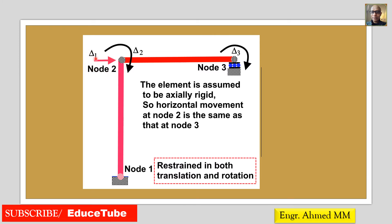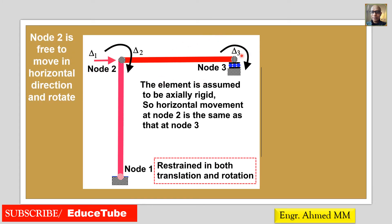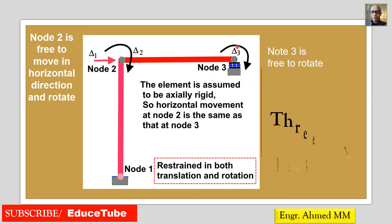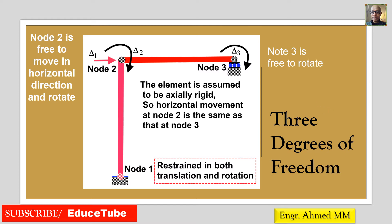That horizontal movement is delta 1. The rotation at node 2 is delta 2, and the rotation at node 3 is delta 3. So how many do we get? We get 1, 2, 3 — so we got 3 degrees of freedom. Node 2 is free to move in the horizontal direction and rotate, and node 3 is free to rotate. So there are 3 degrees of freedom.